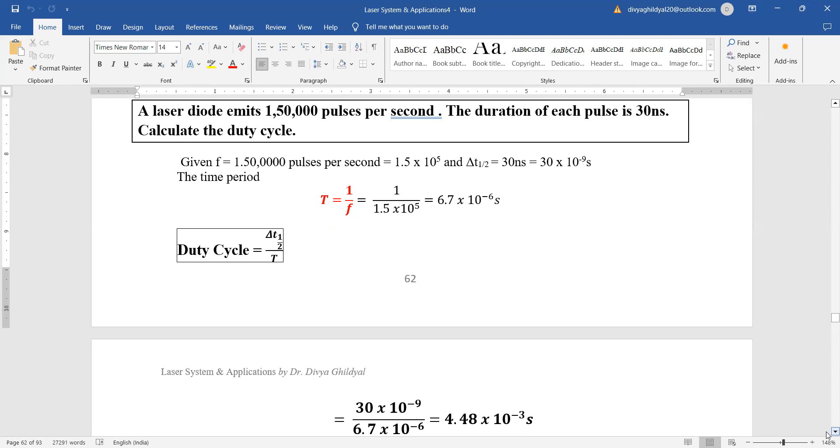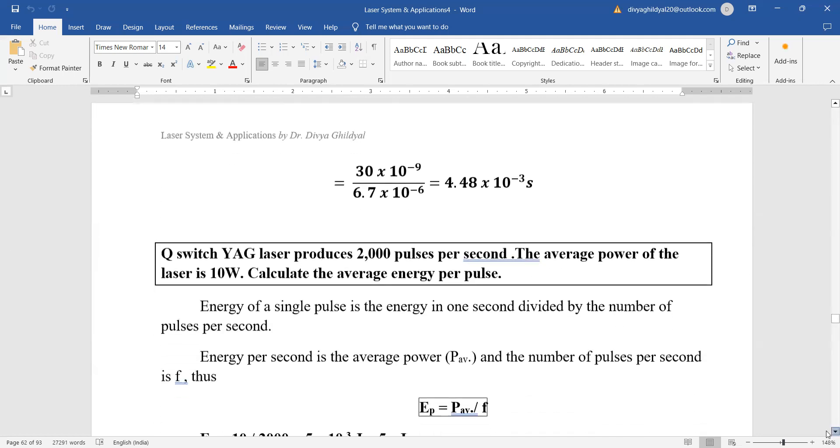The time period is 1 upon F. We have been given the frequency as 1.5 into 10 to the power of 5. We get the time period. Duty cycle is equal to del T half upon capital T, and this gives us the answer.